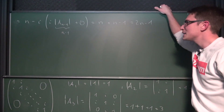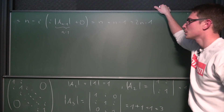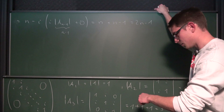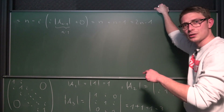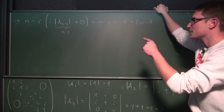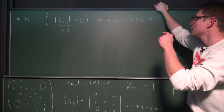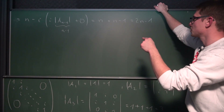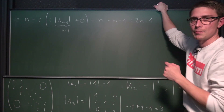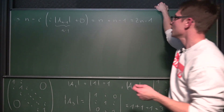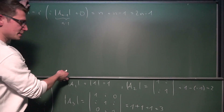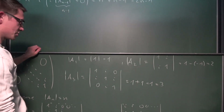So we done goofed here. I either messed something up in the calculations — but I'm pretty certain I did everything right, since it's the same structure as the matrix we did previously, and complex entries don't make any difference when it comes to the Laplace algorithm, because the complex numbers form a field. So the only option is that our induction hypothesis is wrong.